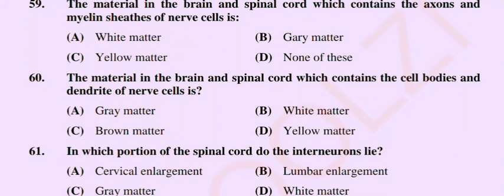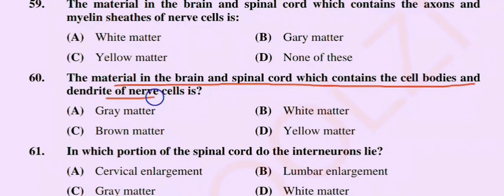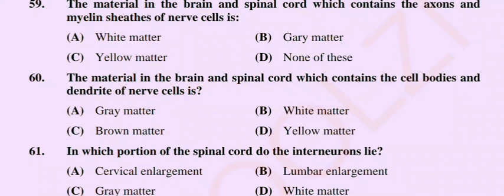Question number 60: The material in the brain and spinal cord which contains the cell bodies and dendrites of nerve cells is — option A: grey matter, option B: white matter, option C: brown matter, option D: yellow matter. The correct option is option A: grey matter. That was our lecture for today; we will meet again in the next video.